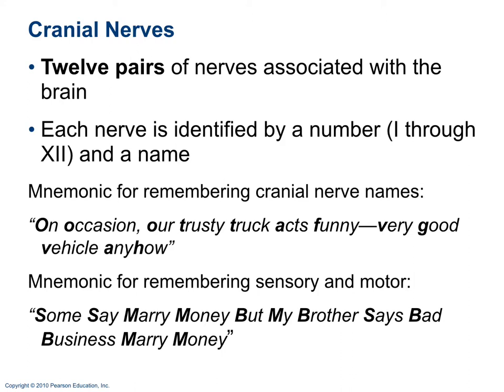Another very helpful mnemonic tells you whether each cranial nerve is sensory, motor, or both: 'Some Say Marry Money, But My Brother Says Bad Business, Marry Money.' S = sensory, M = motor, B = both. For example, cranial nerve 4 begins with M, so it's motor; cranial nerve 5 begins with B, so it's both sensory and motor. This helps you remember the functional type of each cranial nerve for testing purposes.